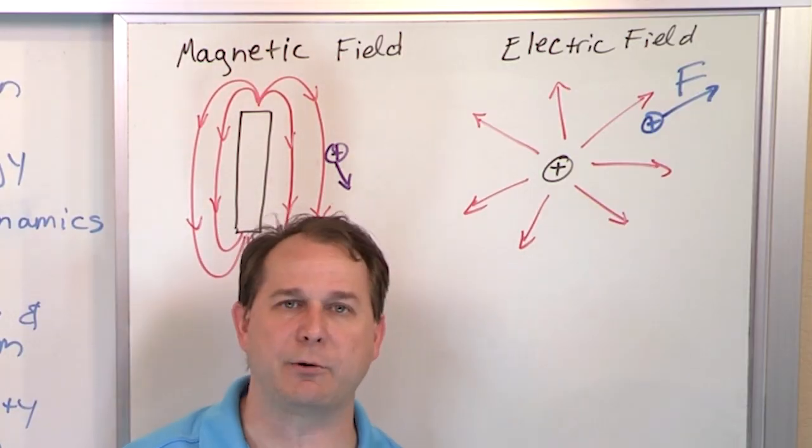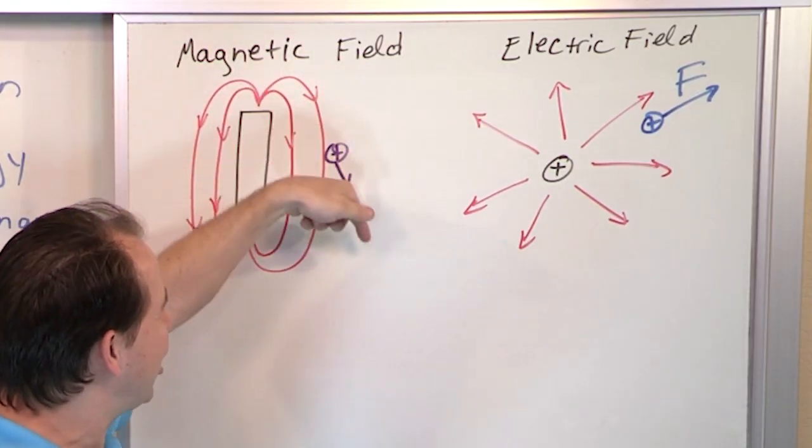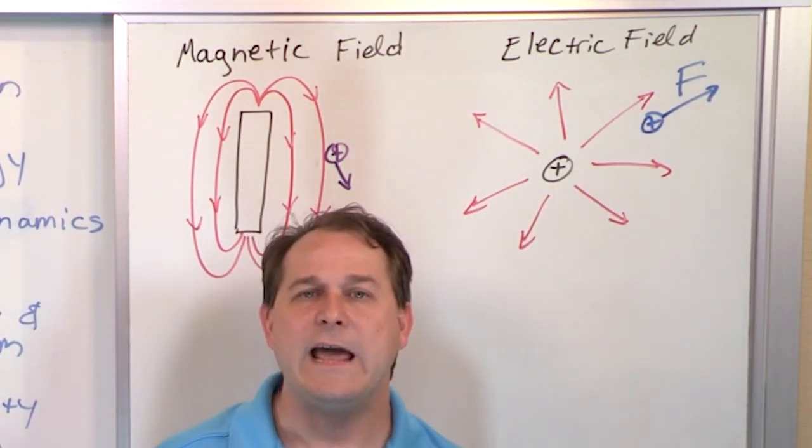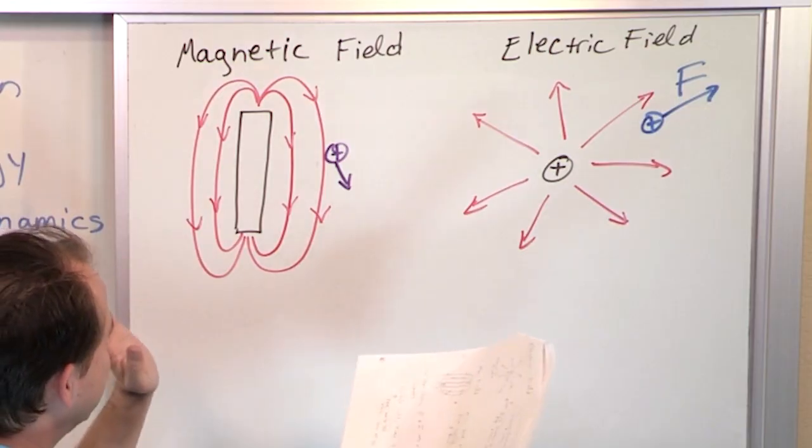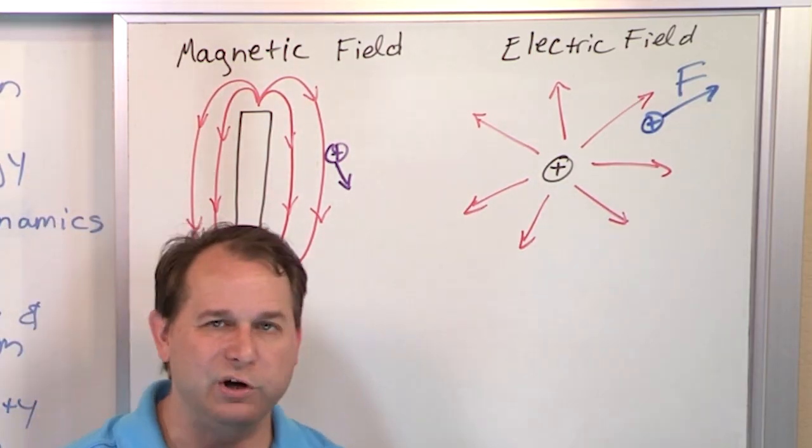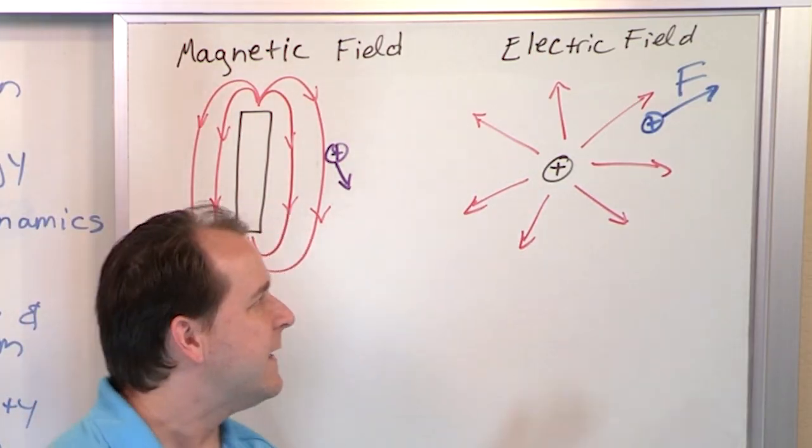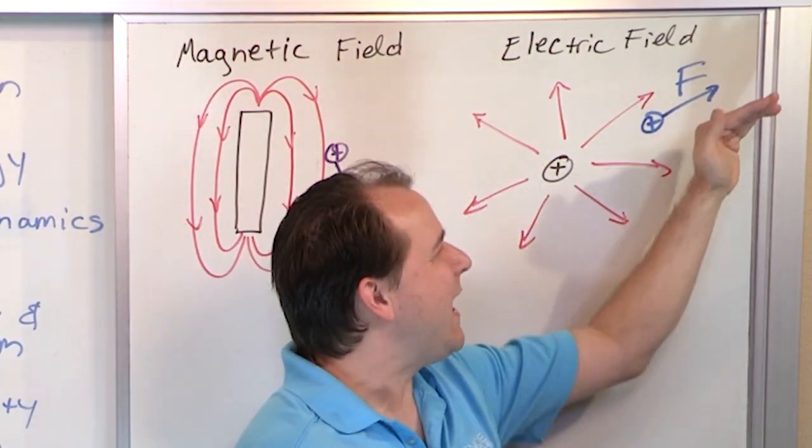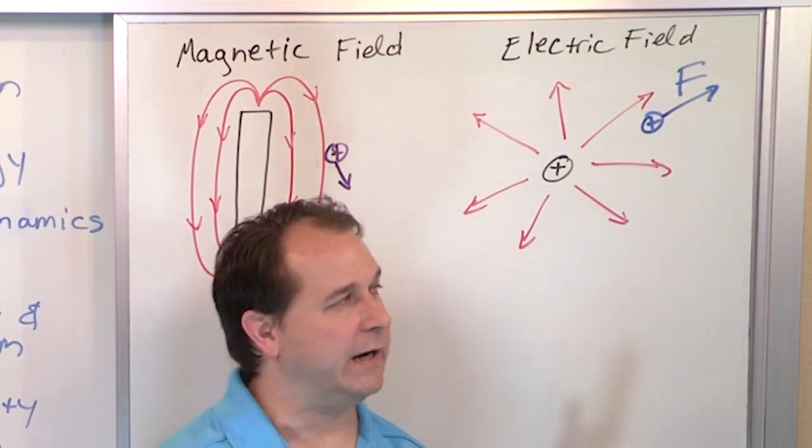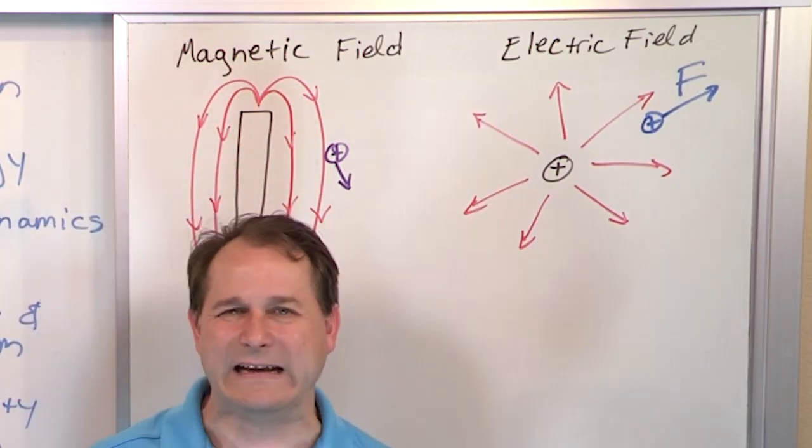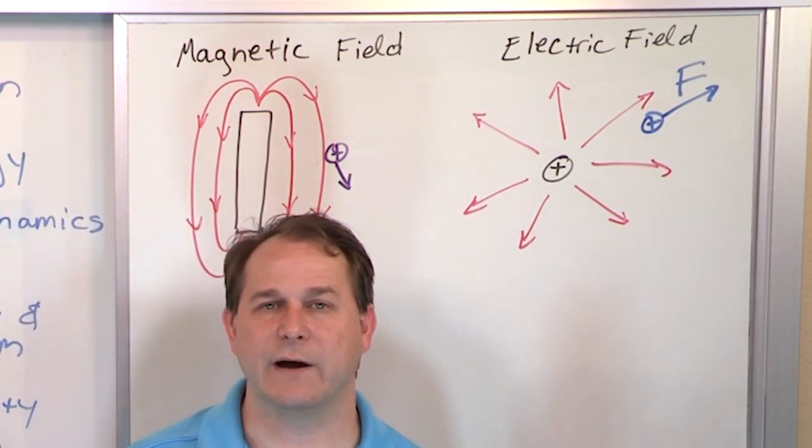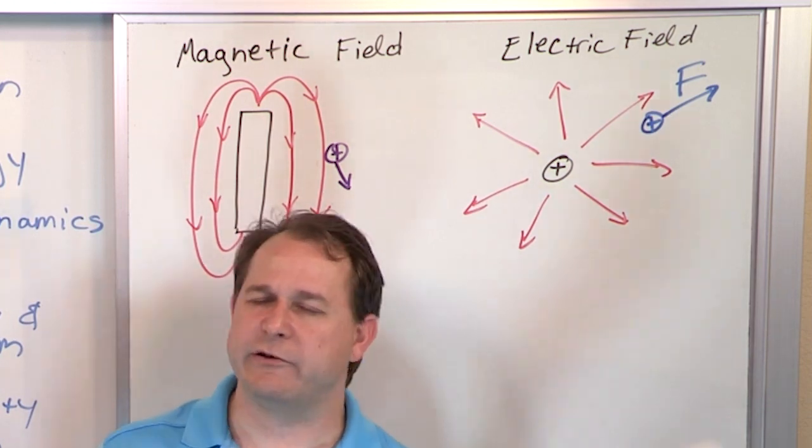The magnetic force will push that particle, but it will not push it along the direction of motion like this one. It'll push it sideways. So it's really bizarre. Not only are the fields, they look different, but they actually push on charged particles differently. The proton is pushed away in the same direction of the field lines, and the other guy, only when it's moving, is pushed tangential to the magnetic field. But only when it's moving. When it's stationary, nothing happens at all.